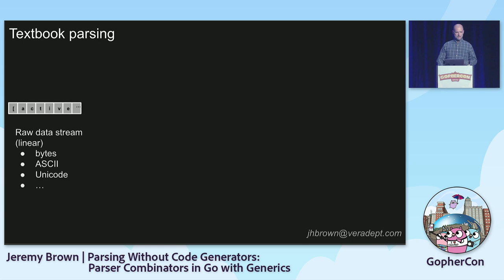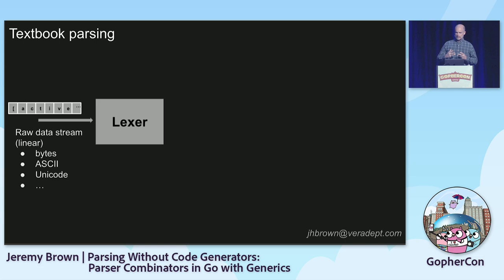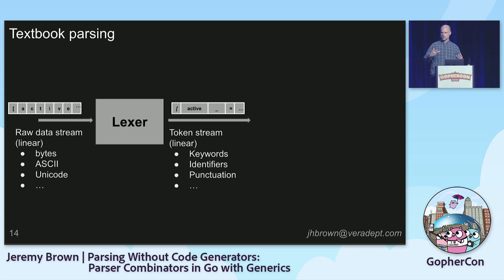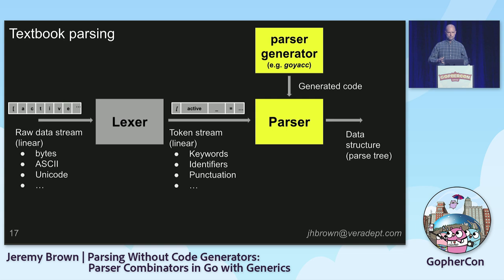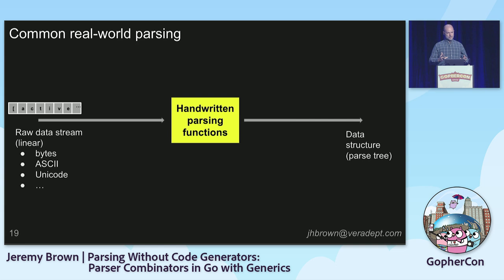Textbook parsing, which you may have encountered in a computer science curriculum, is often broken into two steps. The first is lexing, where we take the stream of bytes or characters and turn them into a stream of higher-level tokens — keywords, identifiers, numbers, punctuation bits — still a linear stream with no structure. Then parsing is where we take that stream of tokens and turn it into our resulting data structure, the parse tree. It's common to generate parser code using a tool like GoYACC, or to just handwrite a parser as a set of interrelated functions that call each other, passing the remaining input along with other state.